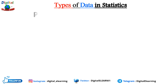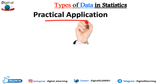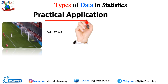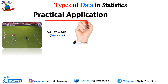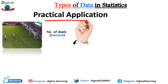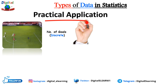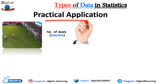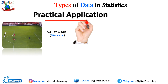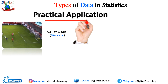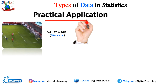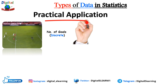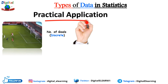Let's look at some practical applications of these data types in real life. Consider the number of goals scored in a football match. You can count the actual number of goals, and they will always be whole numbers — like one, two, or three — with no fractions. Each goal is a distinct event that can be counted, making this an example of discrete data.